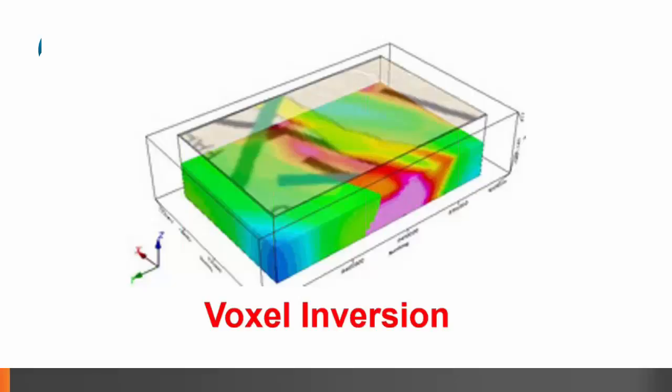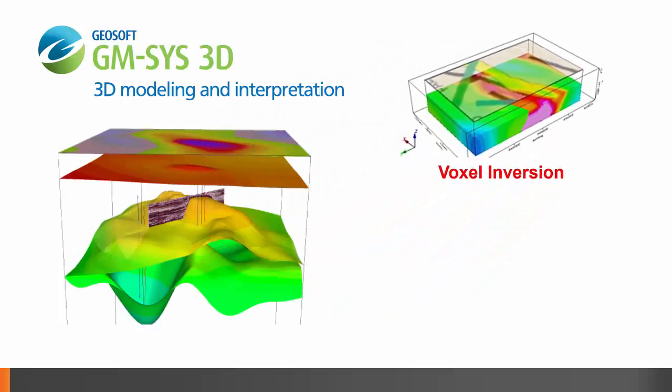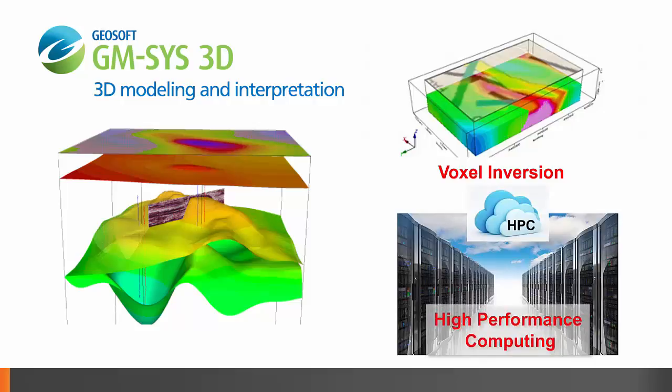Another problem that we had to overcome is that these voxel inversions are very CPU intensive. The models are large, the compute power required to do full 3D inversions like this is very high, and frankly this computing power required is simply not available to most interpreters. To solve that problem we've turned to high performance computing in the cloud. We've implemented these inversion technologies in a full cloud environment, so that anybody who's using Valum or GM-SYS 3D and runs Valum, they will get their own high performance computer to run that inversion on.